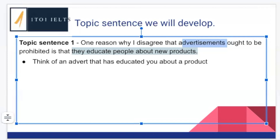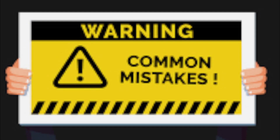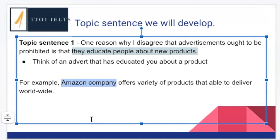We're going to think of a specific company that has educated or educates people. You can use your own personal experience because almost all adverts inform you about their products. Apple, for instance, shows you the function of their products — that would be something. Mary has actually written an example for us and I wanted to point something out because this is a very common mistake. The content is really nice: 'For example, Amazon company offers a variety of products that are able to deliver worldwide.' On a language point — 'Amazon company': is this okay or is there a problem here? In English, we do not put the word 'company' after a company name.